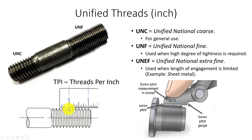We're counting the threads: 1, 2, 3, 4, 5, and 6 threads per inch right here - that's common on a 1-inch thread. So we have UNC and UNF threads.